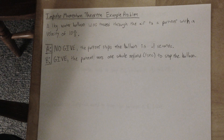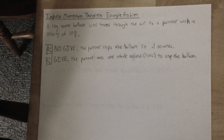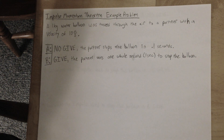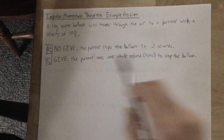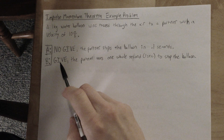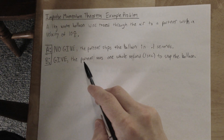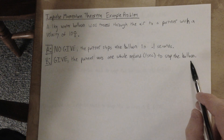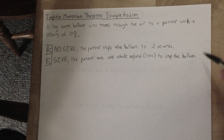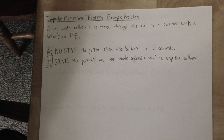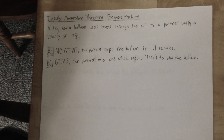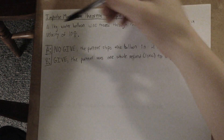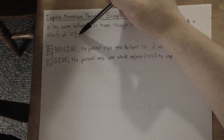We're going to compare giving with the balloon as you catch it versus keeping your hands rigid. In situation A, you keep your hands rigid — no give — and the partner stops the balloon quickly in a tenth of a second. In situation B, you give with it while you catch it, and the partner uses one whole second to stop the balloon. These are your contact times based on whether you keep your hands rigid or give with the balloon. The problem also gives the mass of the balloon and the velocity it's thrown at.